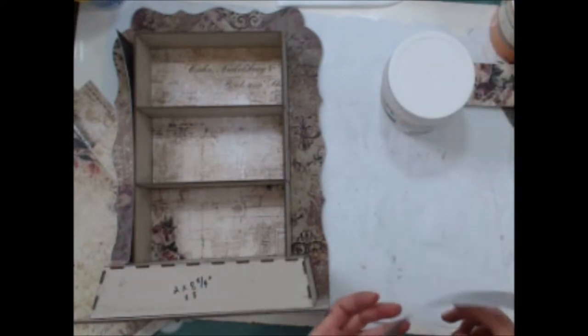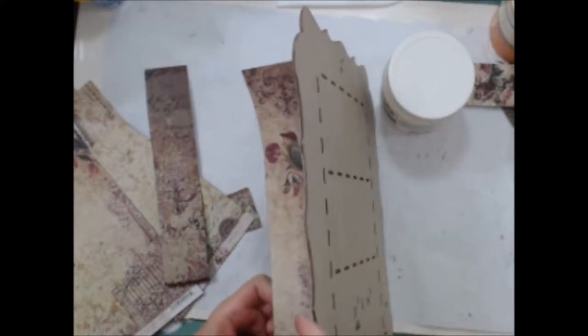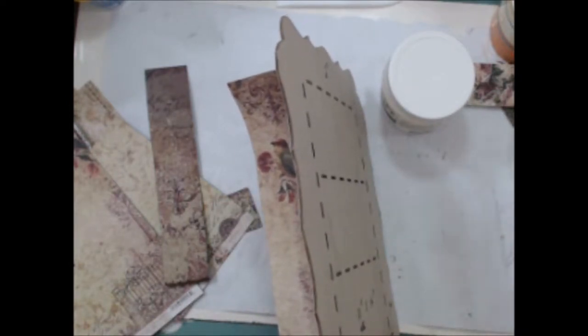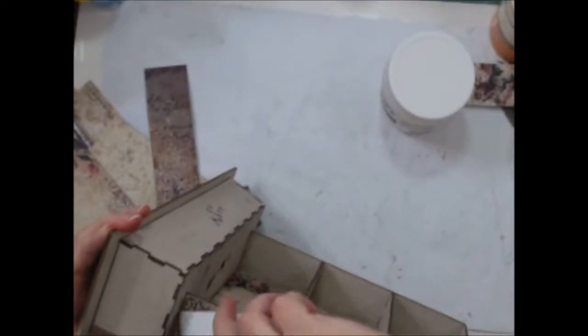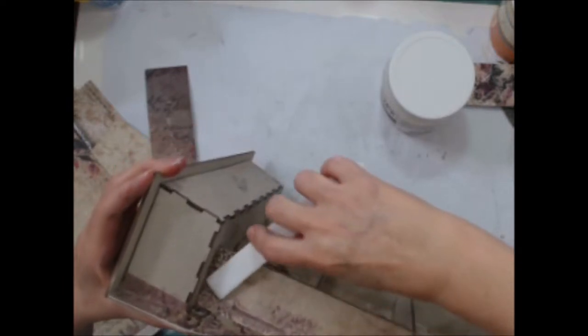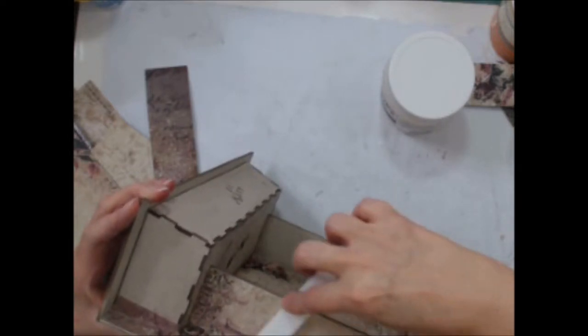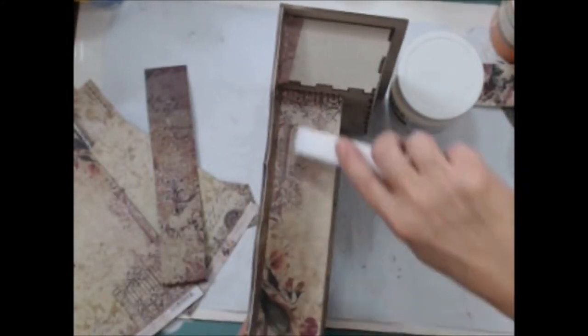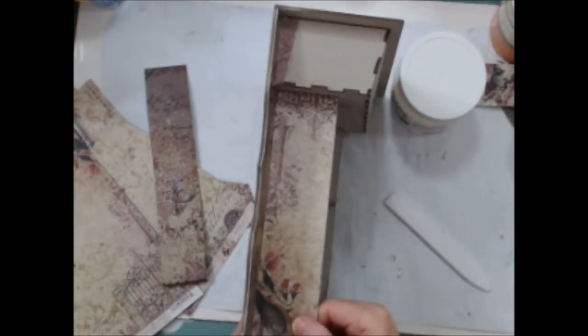Let's go ahead and this is the side with the bird and try to keep my head out of the way and just kind of stick that down in there. Get my bone folder and start getting those air bubbles out. Then I will fold that over.